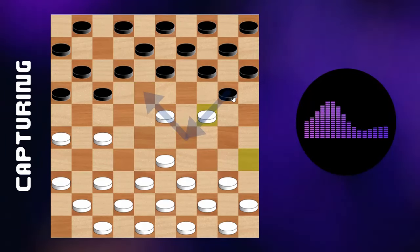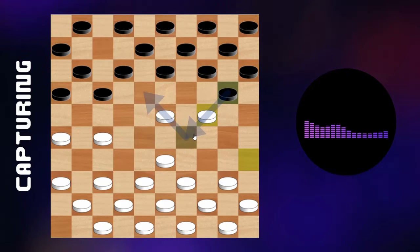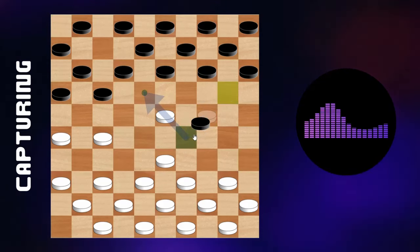If a piece can capture again from the square where it lands, it must continue capturing. This way, it can make multiple successive jumps and thus capture multiple pieces in one turn.